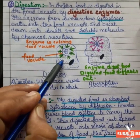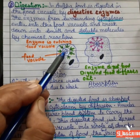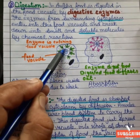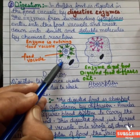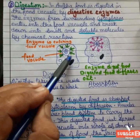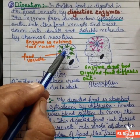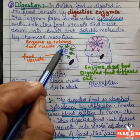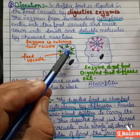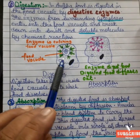The enzymes enter from the surrounding cytoplasm into the food vacuole. The food particle inside the food vacuole is broken down into small, soluble molecules by a chemical reaction with the help of these enzymes. So digestion takes place inside the vacuole, due to which the food dissolves.